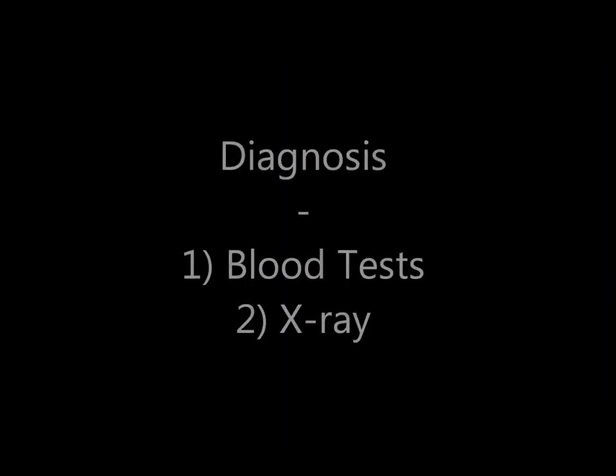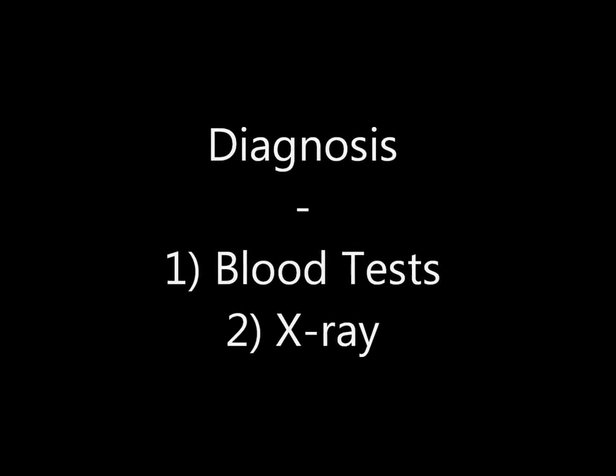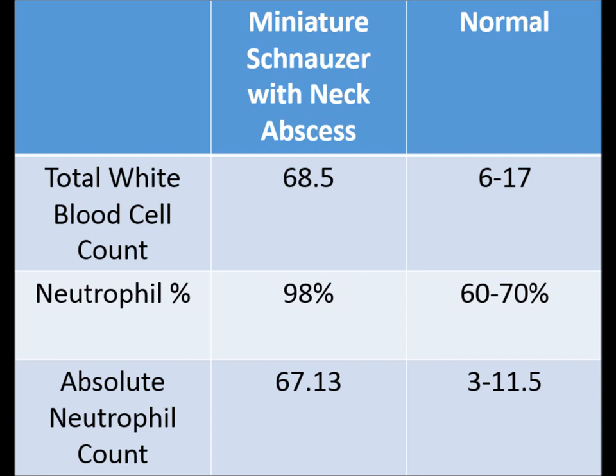Let us take a look at how we diagnose this case through blood tests and an x-ray. For bacterial infection, both the total white blood cell count and the neutrophil count should go up. But for viral infections, the opposite is true. From this table, you can see that this neck abscess is clearly caused by a bacterial infection.